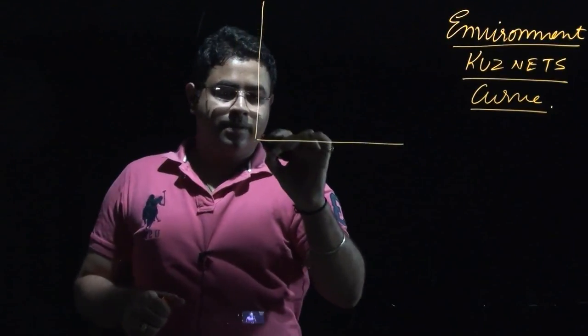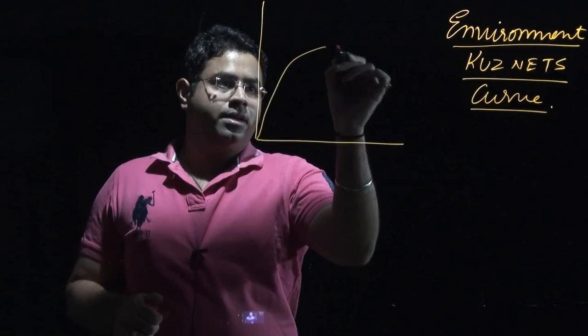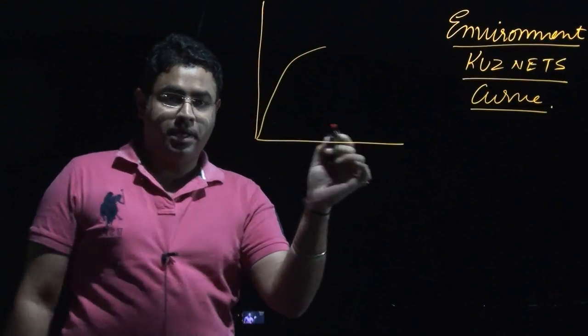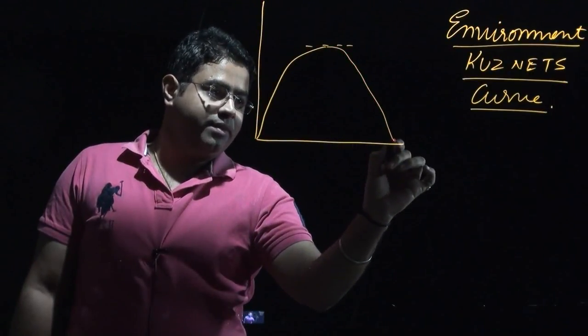So it is just like this: in the beginning there will be increase in the inequality. Once it has touched the peak, then it will actually begin to decline, then inequality will decline.